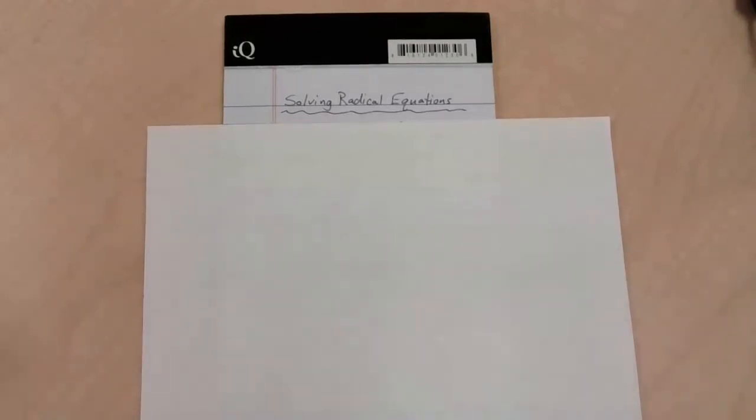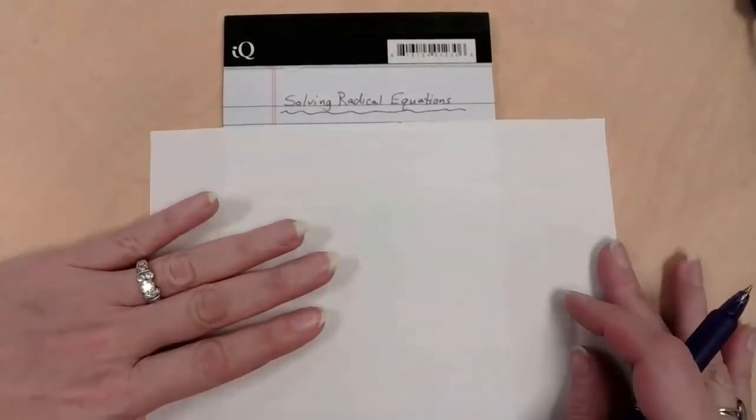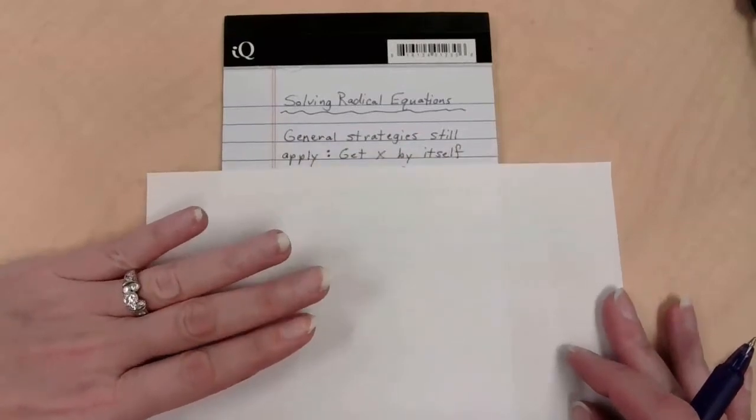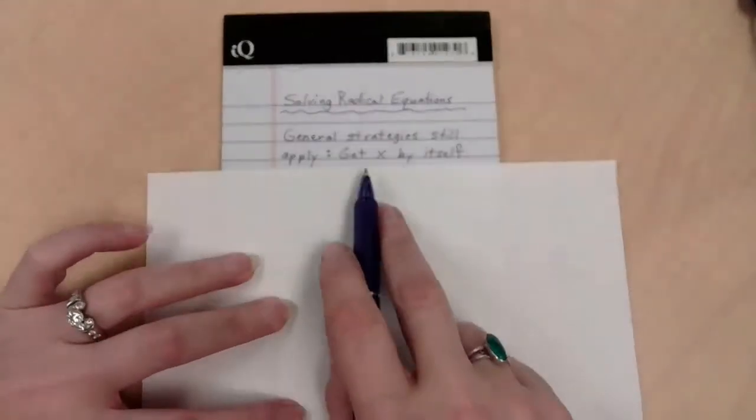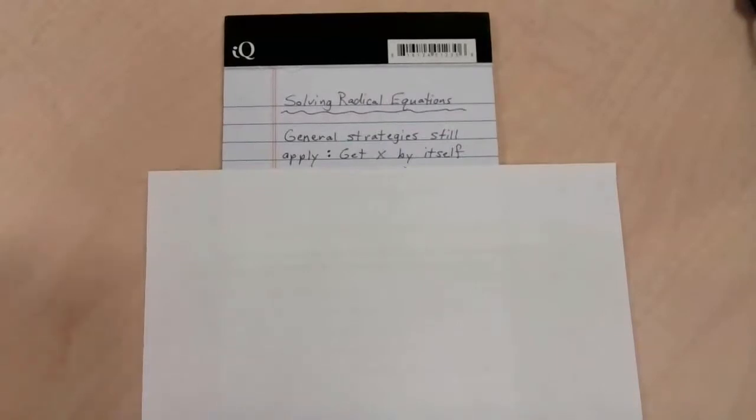All right, so what does this mean? This means that you probably already have some knowledge in your brain that's useful for the topic, because if we're solving equations, our general equation-solving strategies still apply. We're still going to be trying to get the x by itself, so we want to keep that in the front of our brain.